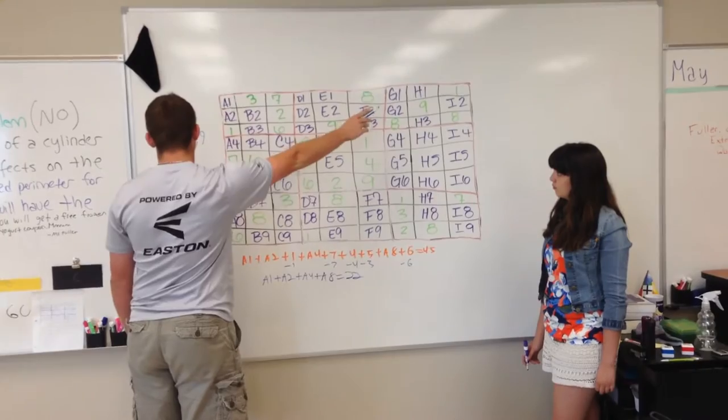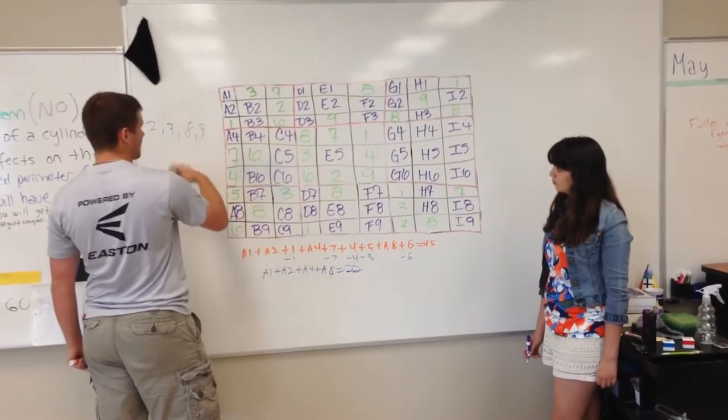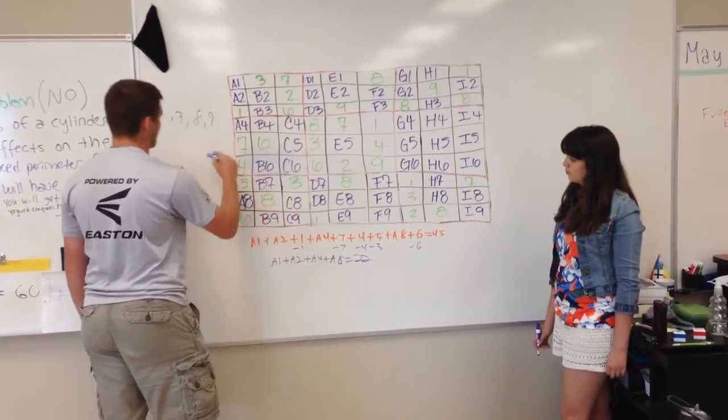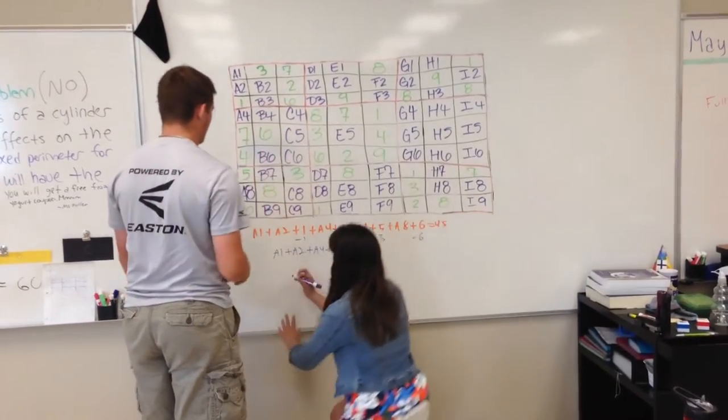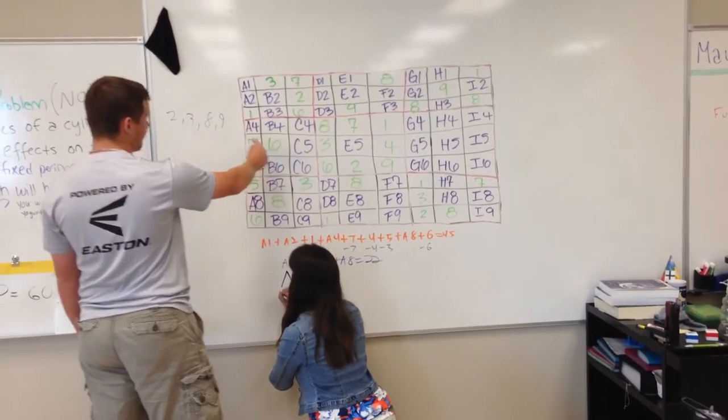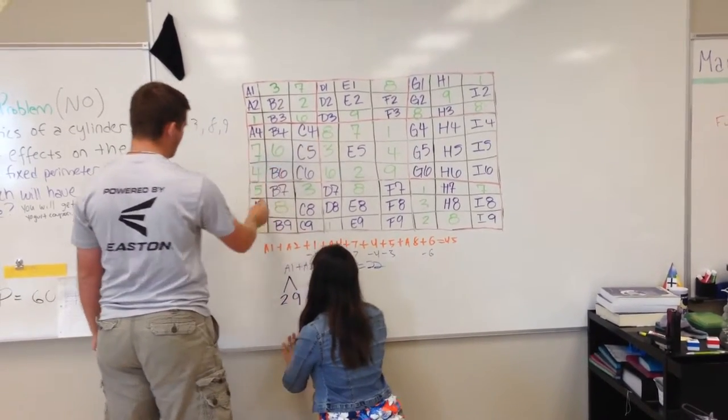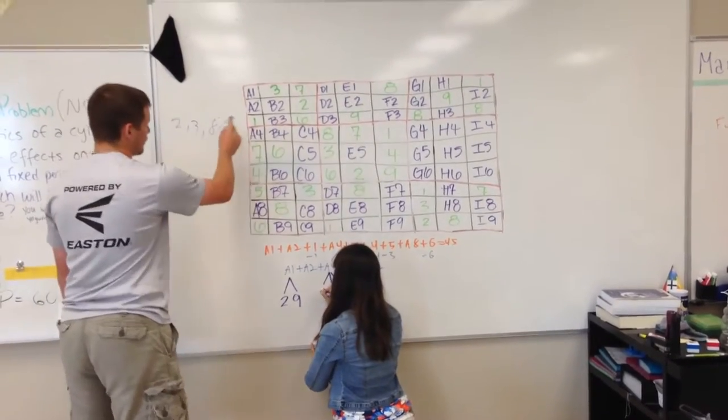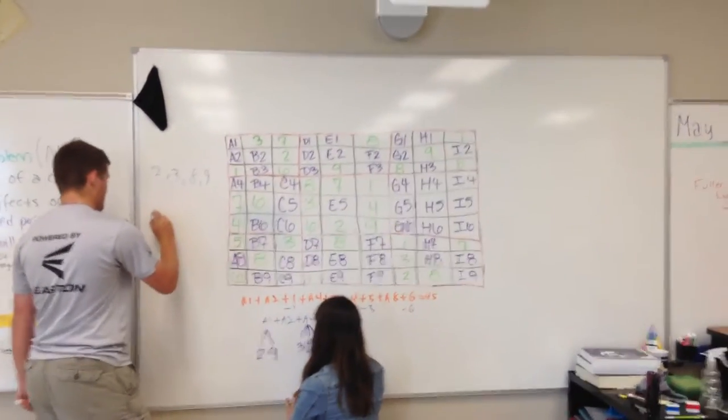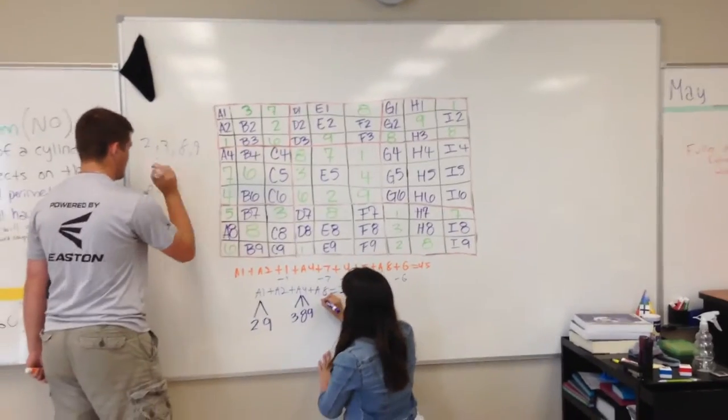it already has an 8 in that row, so A1 cannot equal. A2 doesn't have, and A4 has an 8 already, and A8 already has an 8, so you would know that A2 would have to equal 8.